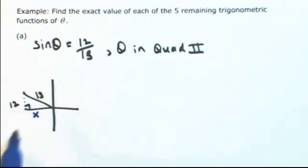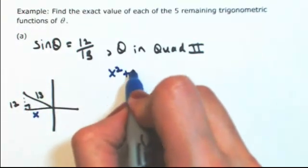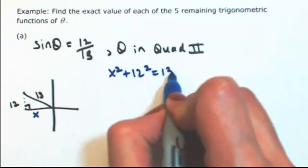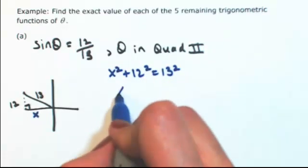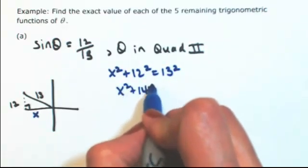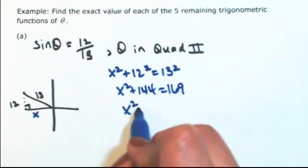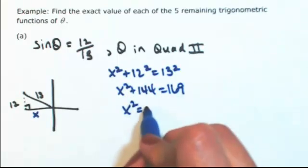To figure out what x is, use Pythagorean Theorem. So x squared plus 12 squared is 13 squared. So x squared plus 144 is 169. x squared is then 25.